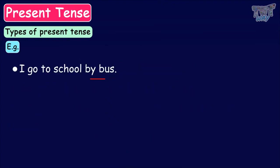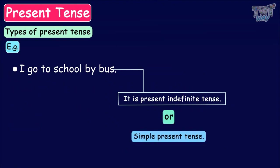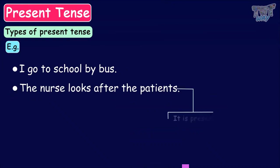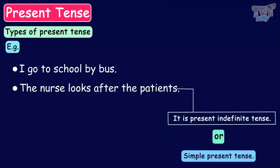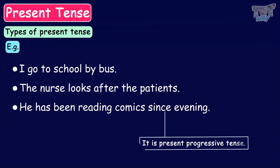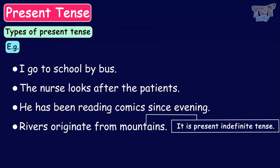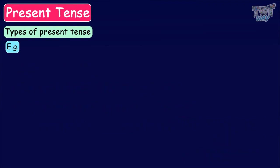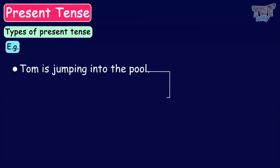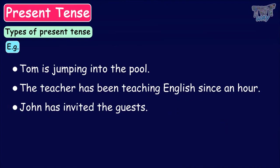'I go to school by bus' — present indefinite tense or simple present tense. 'The nurse looks after the patients' — present indefinite tense or simple present tense. 'He has been reading comics since evening' — present perfect progressive tense. 'Rivers originate from mountains' — present indefinite tense or simple present tense. 'Tom is jumping into the pool' — present progressive tense. 'The teacher has been teaching English since an hour' — present perfect progressive tense. 'John has invited the guests' — present perfect tense.